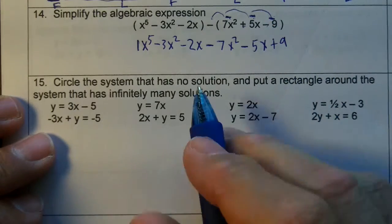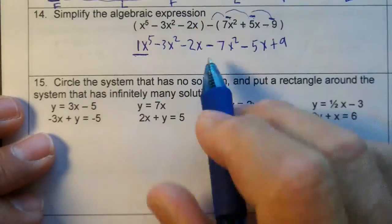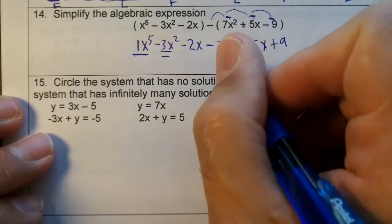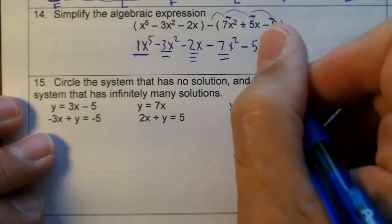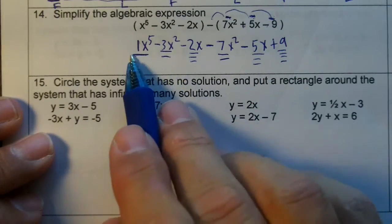Now we're going to single underline our x to the 5th. It's the largest exponent. We're going to double underline the x squares. And let's see, we're going to triple underline our 2x's and our 5x and quadruple underline the 9.